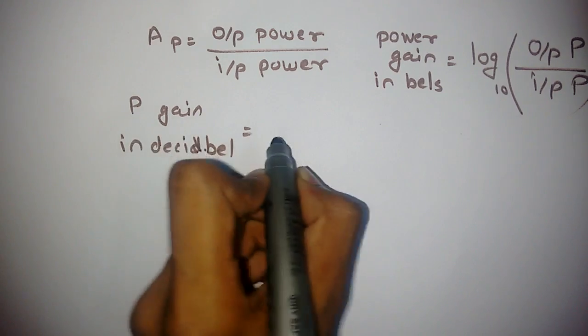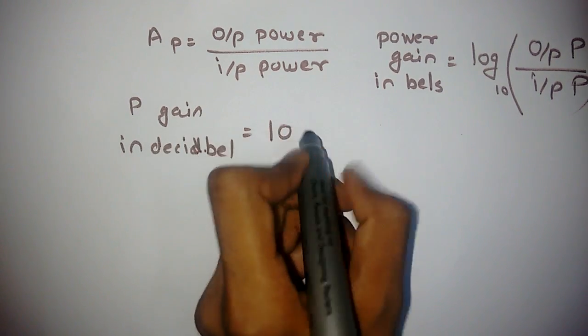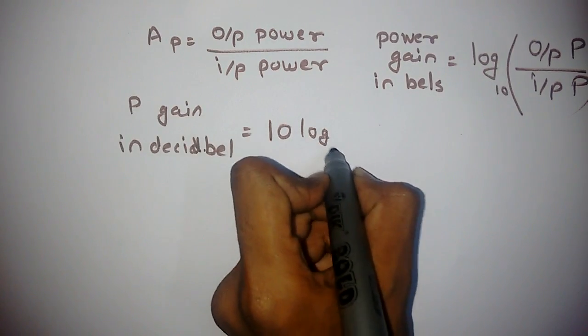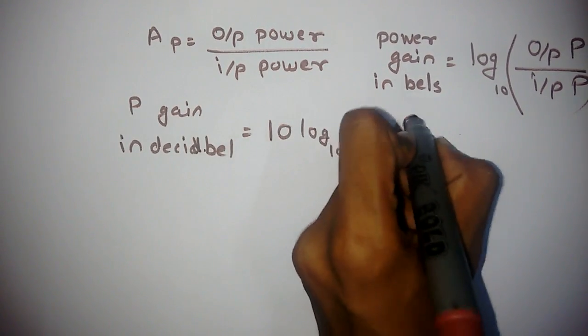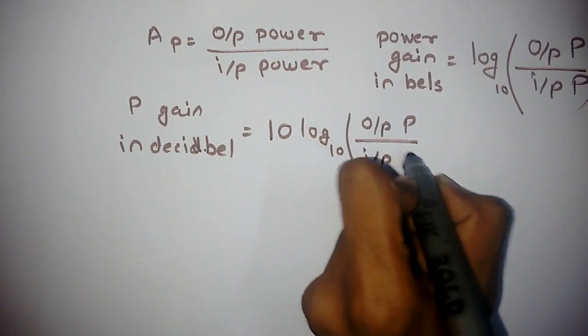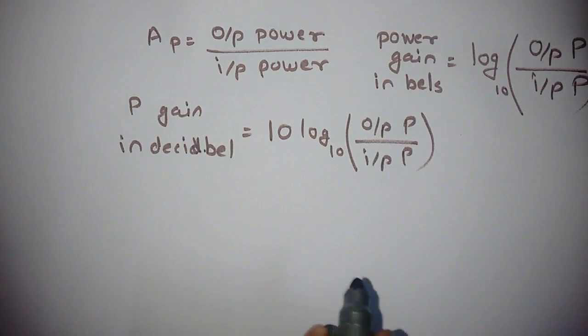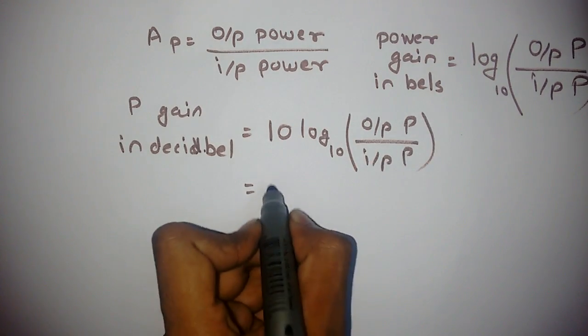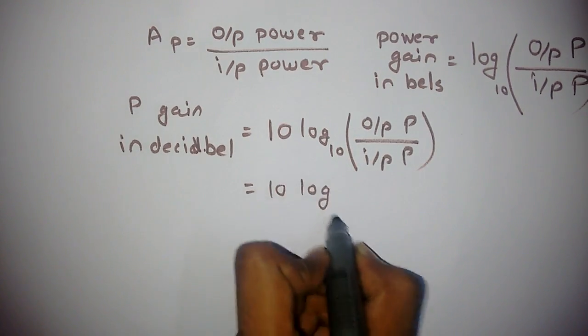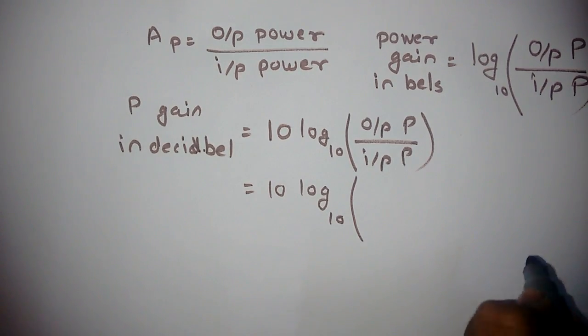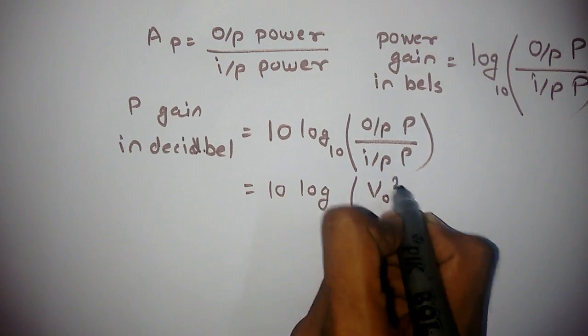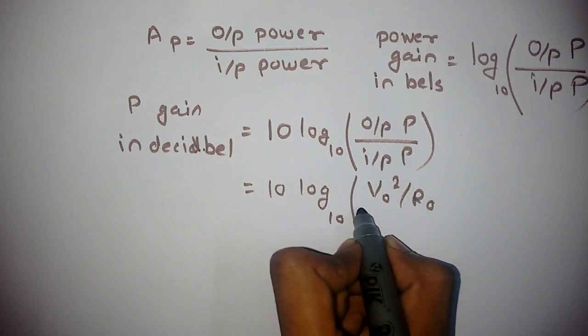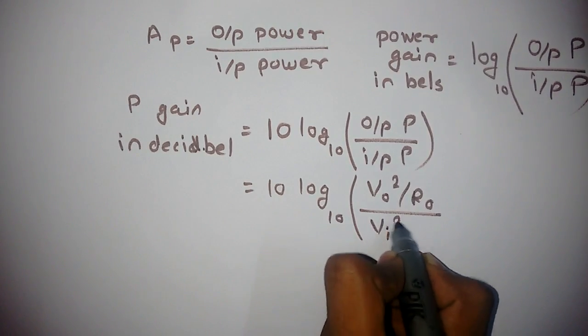Okay, now output power is V into I output, right? Now we'll represent it as VO squared by RO divided by Vin squared by Rin.